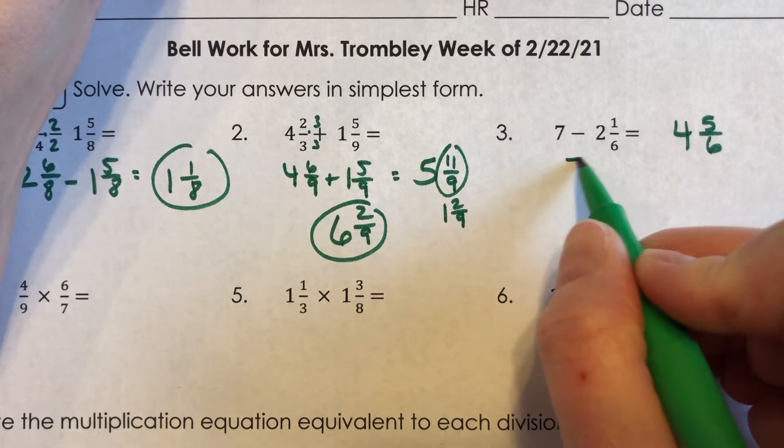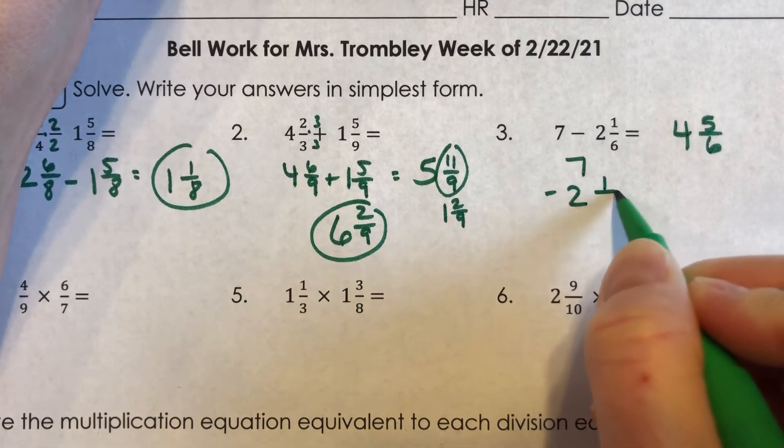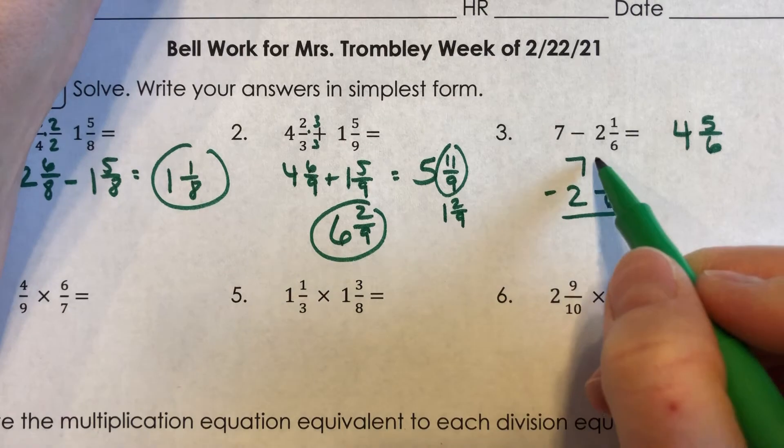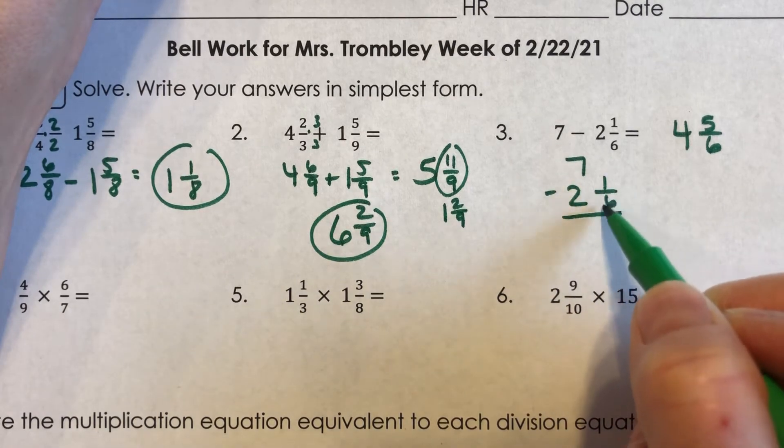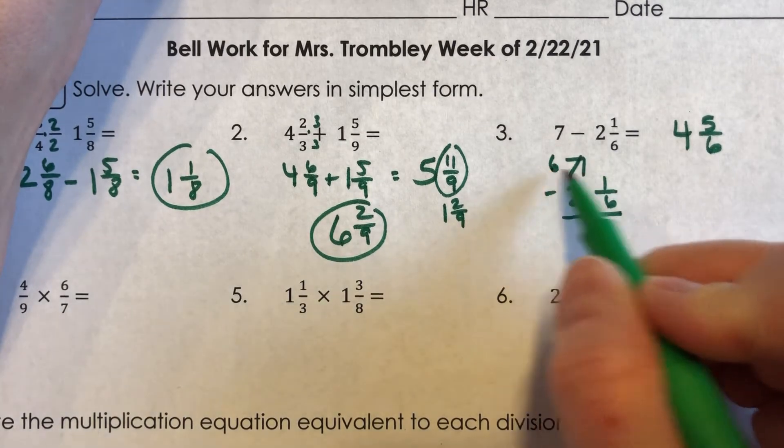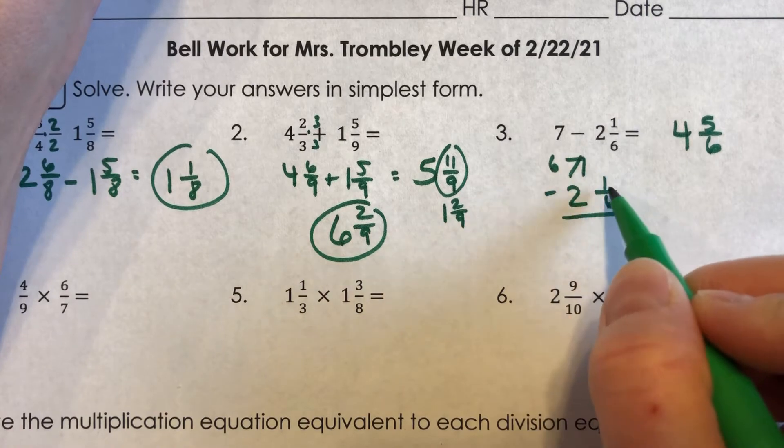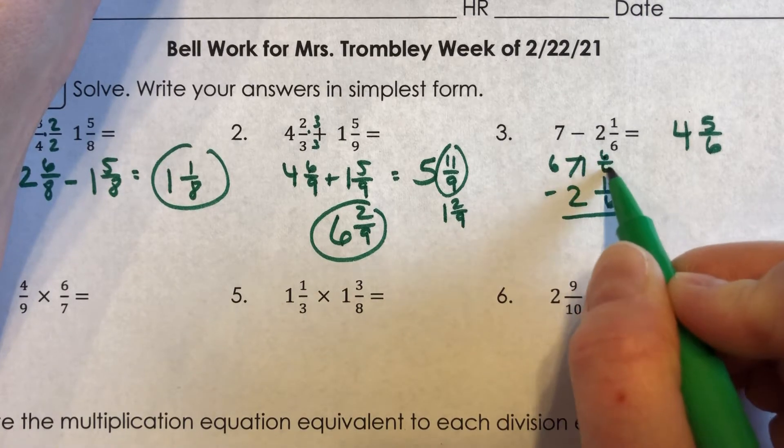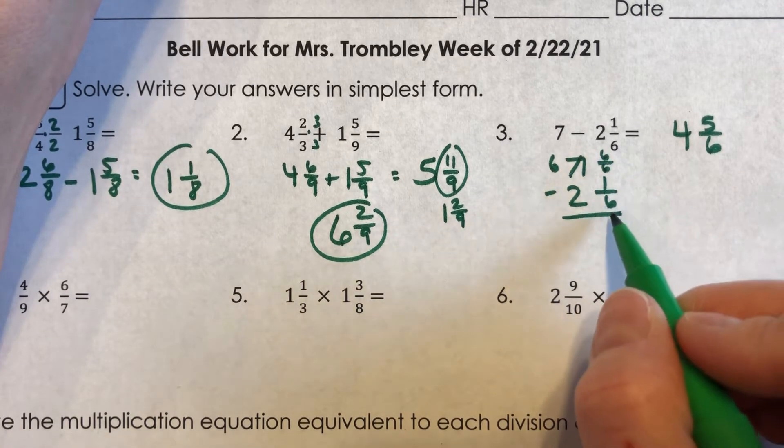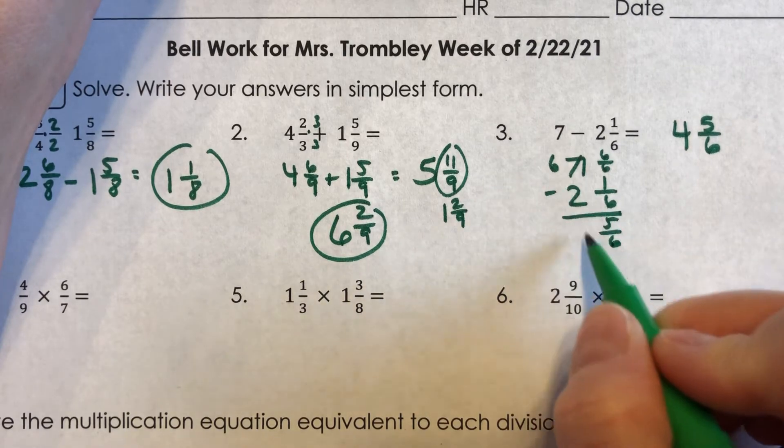If you're like, uh, I don't know, then you could set it up like this. Seven minus two and one-sixths. And this one you would have to borrow for, because I can't take one-sixth away from nothing. So I borrow from that seven. And when I borrow the one whole, since we're dealing with six, it would be six-sixths. And six-sixths minus one-sixths is five-sixths. And six minus two is four.